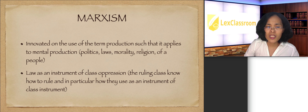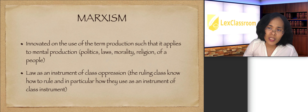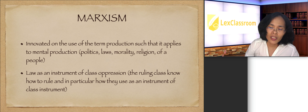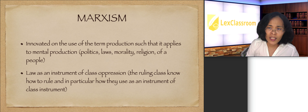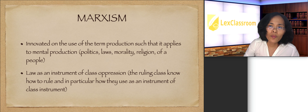Our third theory is Marxism. While Marxism is generally applied in economics, what is notable here is that it innovates economic concepts into the legal institution. One crucial Marxist statement is that the law is an instrument of class oppression. The ruling class dictates what the law should be, such that it becomes an instrument of sustaining or perpetuating the oppression of the lower class.